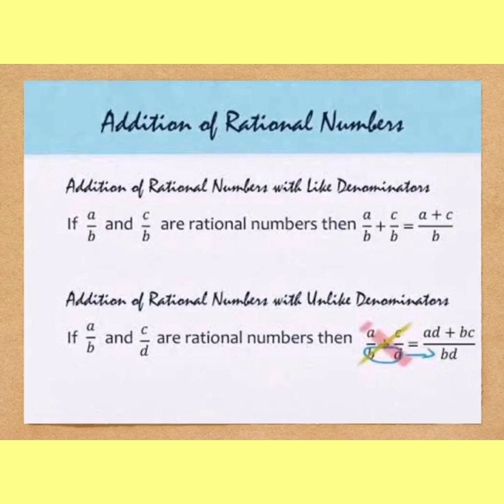then add them: a plus c upon b. But if the denominators are not same, they are unlike. Like a upon b plus c upon d, then denominators will be multiplied bd, then multiply a and d, then c and b. In this way,